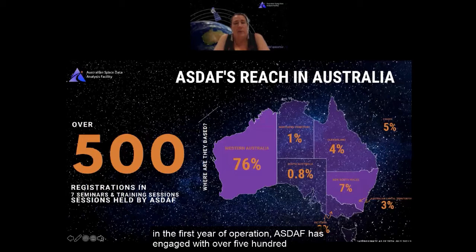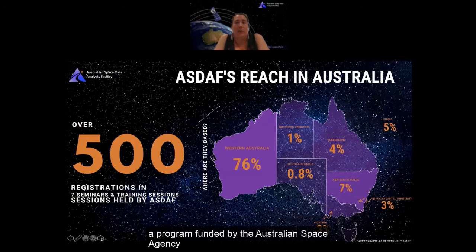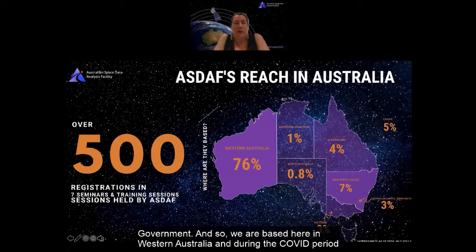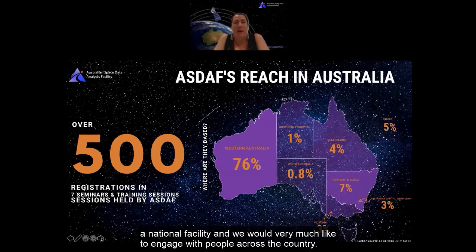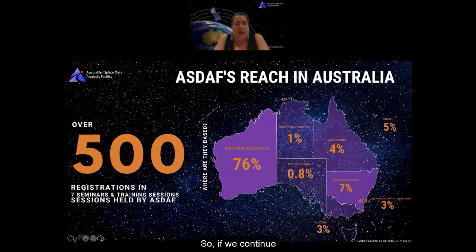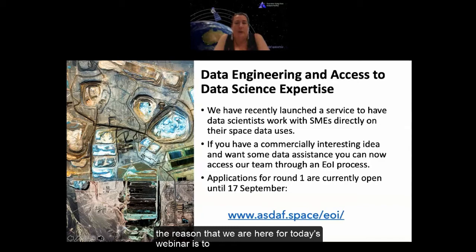In the first year of operation, ASDAF has engaged with over 500 researchers distributed across Australia. As a program funded by the Australian Space Agency, we have a national lens, though we're also funded by the WA state government and based in Western Australia. During COVID we've engaged primarily with people in WA, but we are a national facility and would very much like to engage with people across the country.